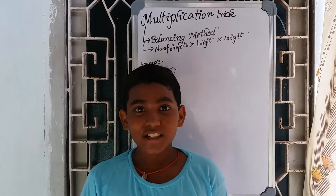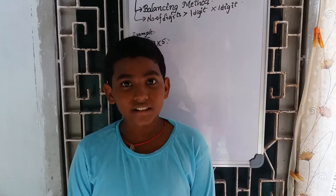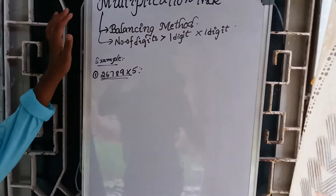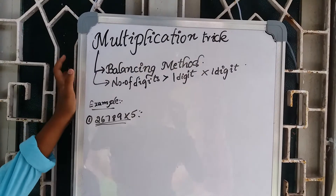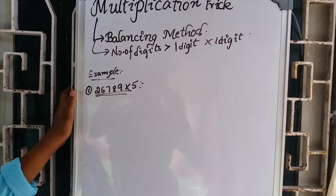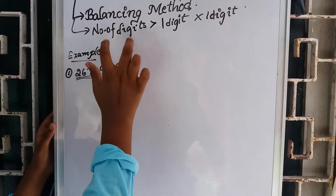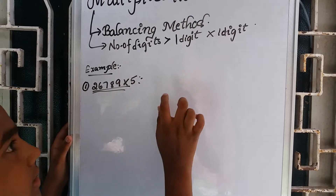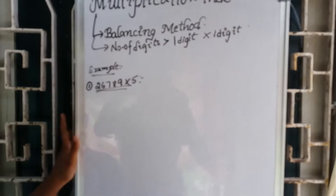Hi friends, I'm going to talk about multiplication. First, I'm going to talk about the multiplication trick. I'm going to talk about balancing, and how many digits there are. I'm going to talk about one digit and two digits. For example,